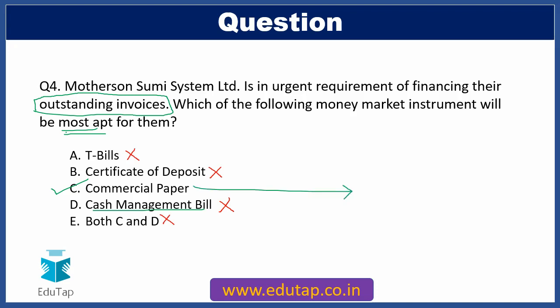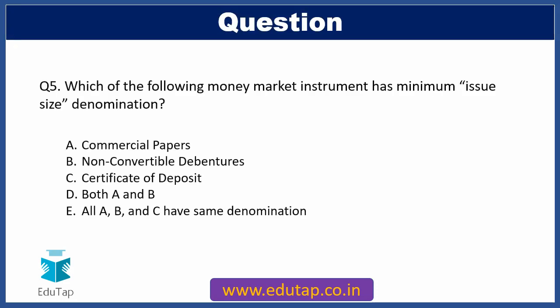Moving on to the last question, question five: which of the following money market instruments has the minimum issue size denomination? Option A: Commercial Paper, Option B: Non-Convertible Debenture, Option C: Certificate of Deposit, Option D: Both A and B (commercial paper and non-convertible debenture), Option E: All three — A, B, and C — have the same denomination.